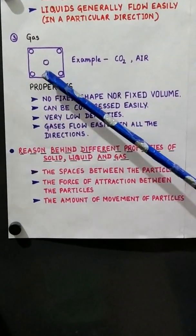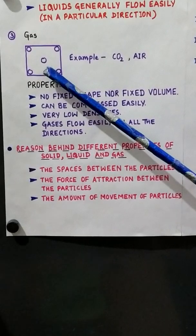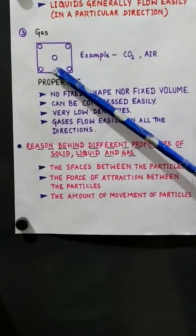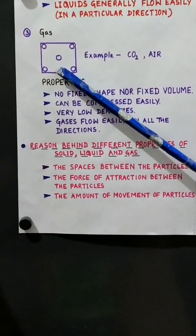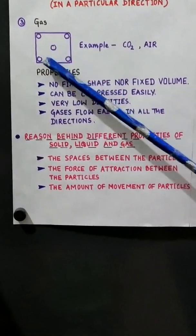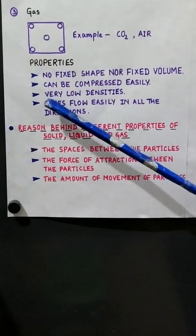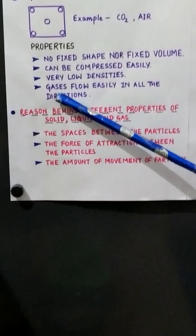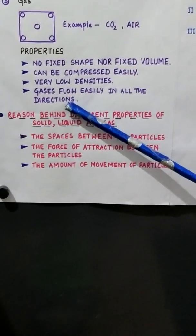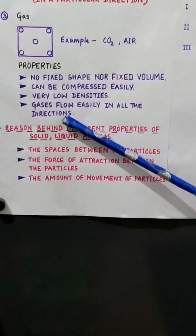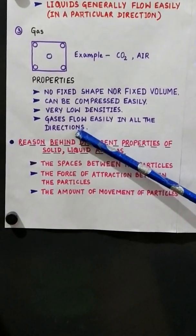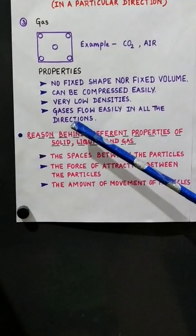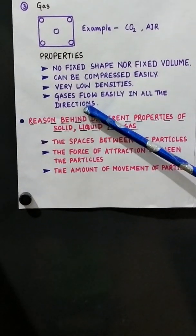Regarding density, the density of gases is very less. Density is the ratio of mass and volume. When there are fewer particles, the mass is less and so the density of gases is very low. The fourth property is that gases flow easily in all directions, because the force of attraction between the particles is very, very less and they are free to move from one place to another.